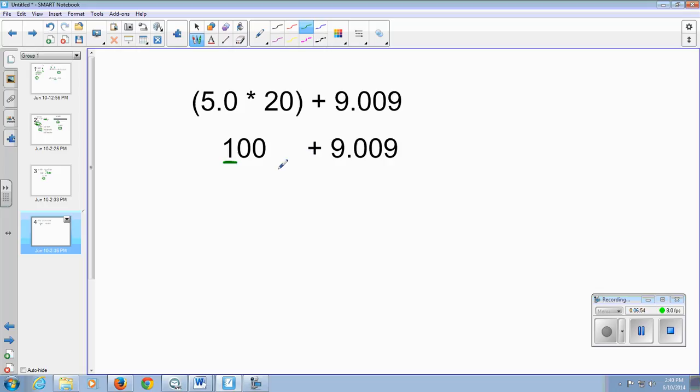When we go and add 100 plus 9.009, we're only precise to the hundreds spot. So being that we're only precise to the hundreds spot, when we add these two numbers together...